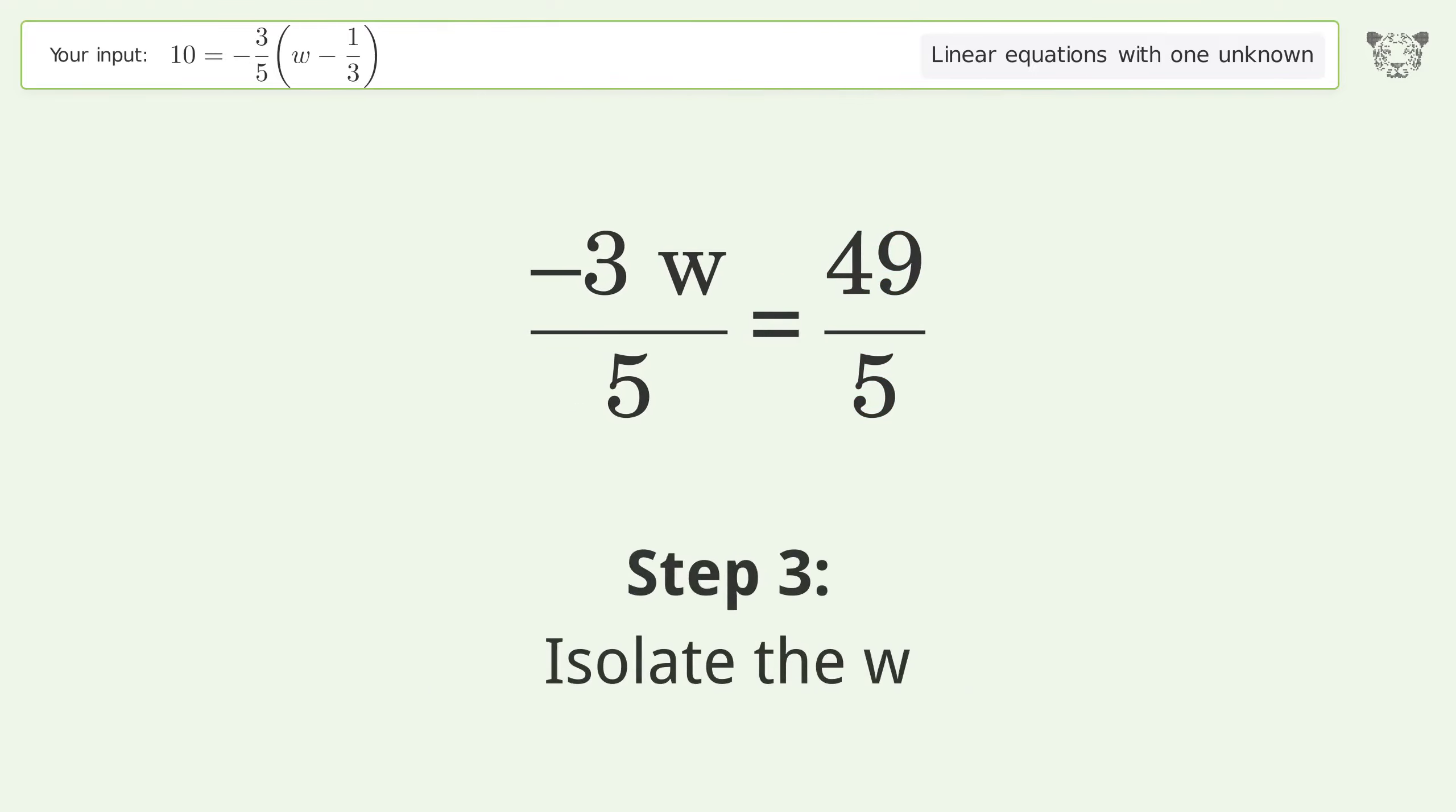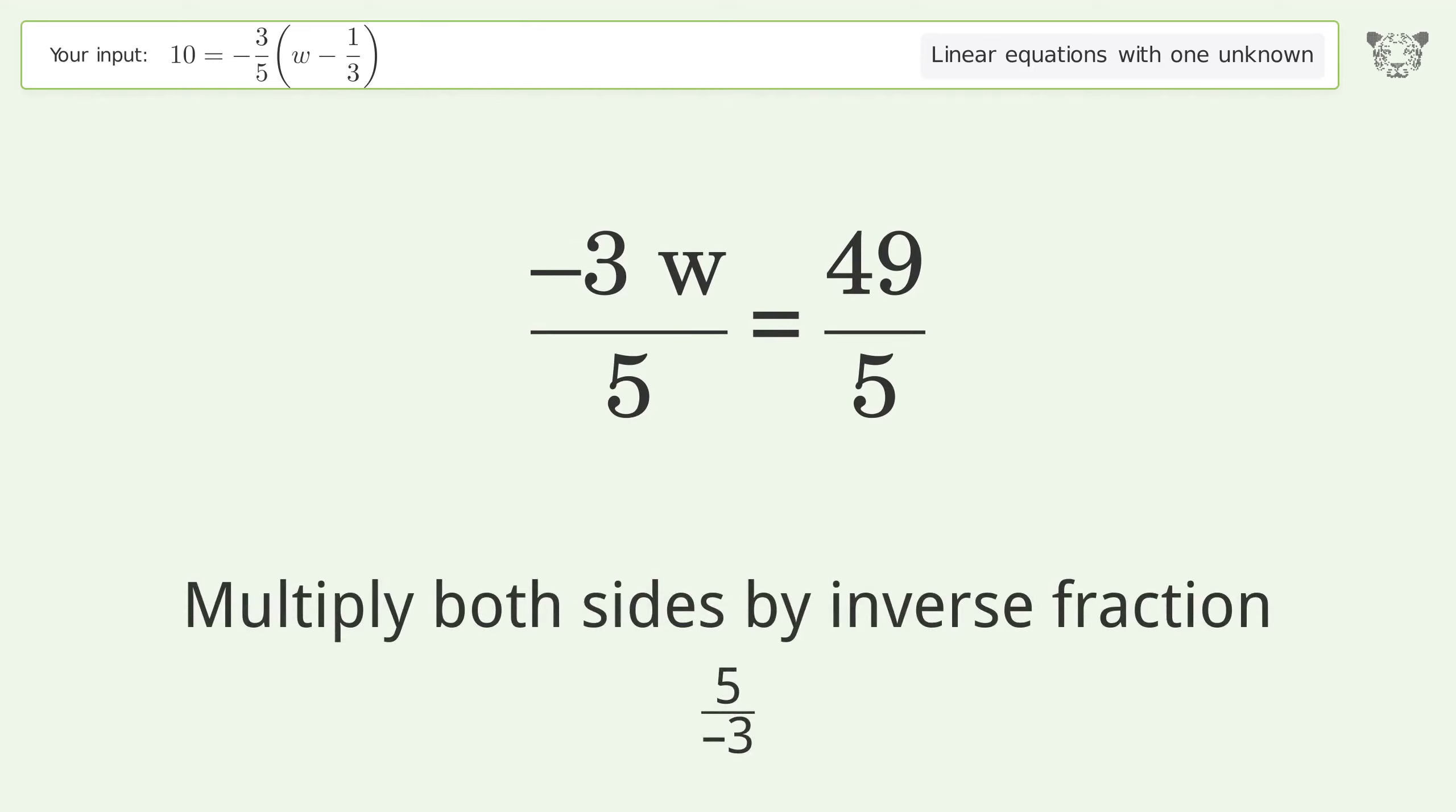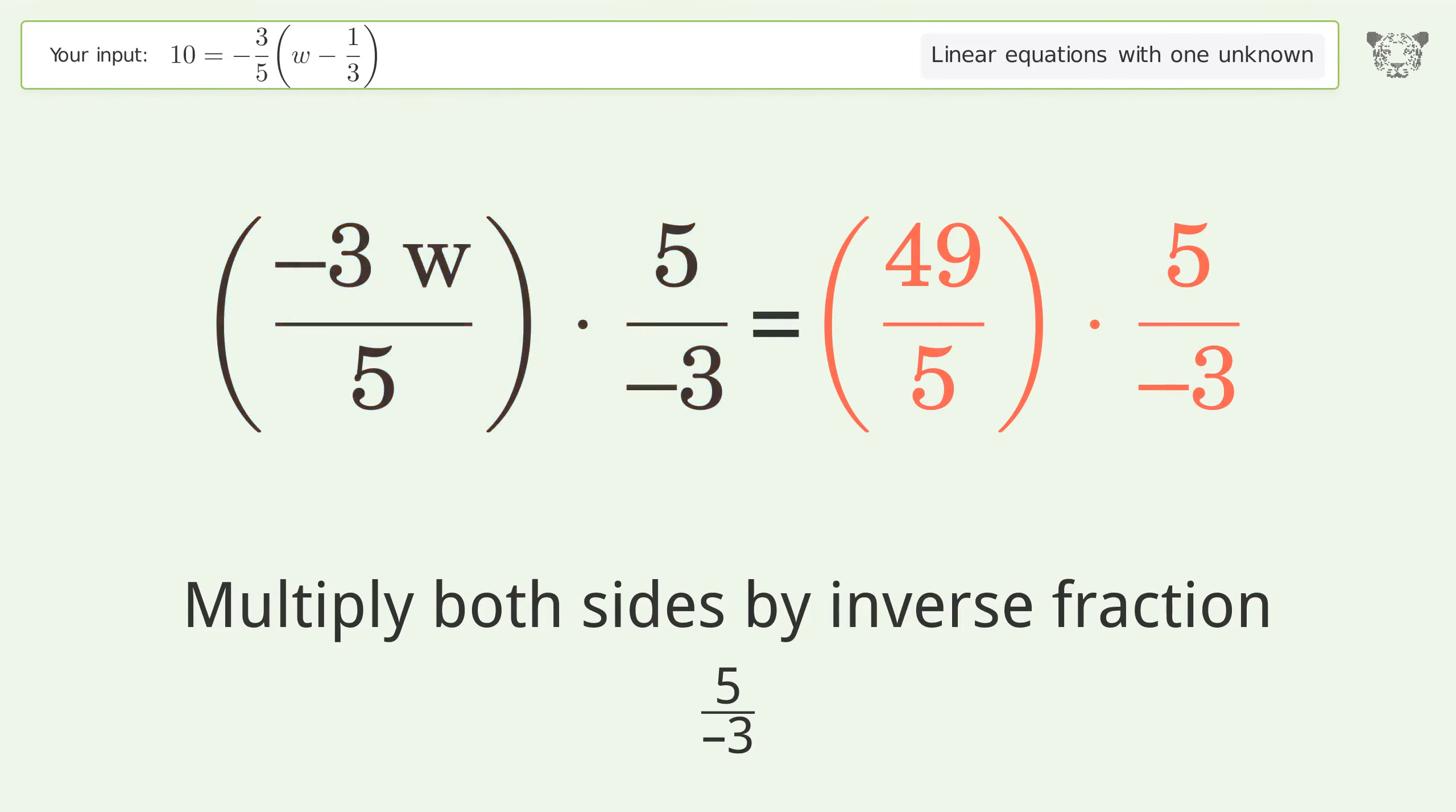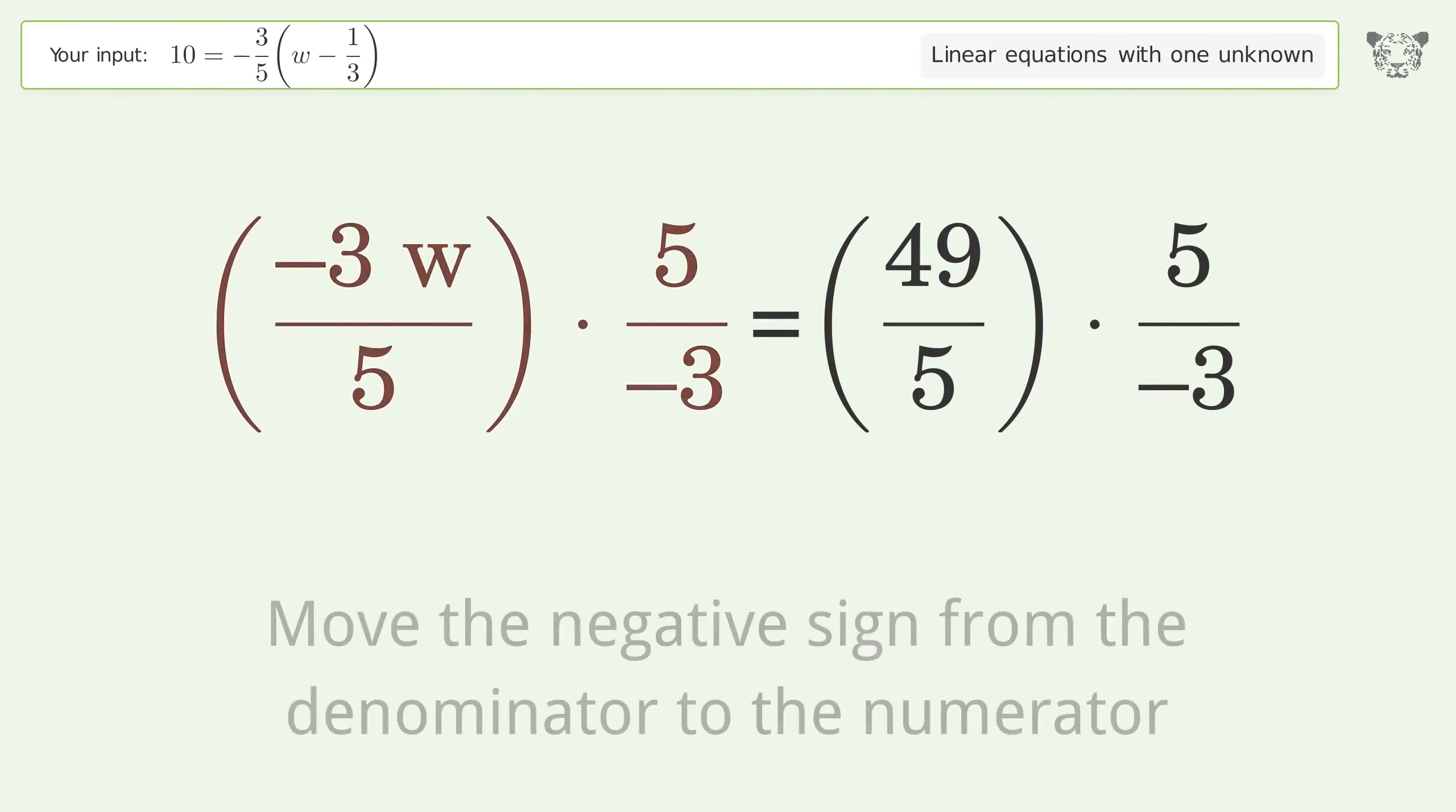Isolate the w. Multiply both sides by inverse fraction 5 over negative 3. Move the negative sign from the denominator to the numerator.